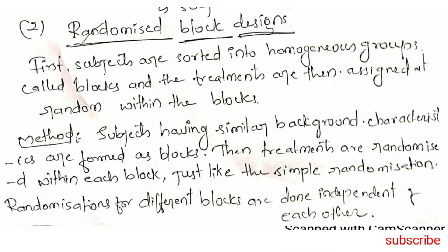Randomised Block Design: Subjects are first sorted into homogeneous groups called blocks, and the treatments are then assigned at random within the blocks. Subjects having similar background characteristics are formed into blocks, then treatments are randomised within each block, just like simple randomisation. Randomisation for different blocks is done independently of each other.